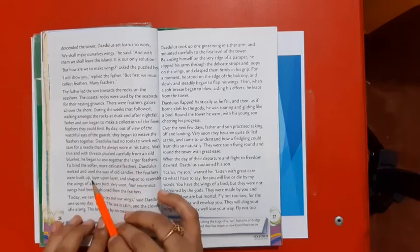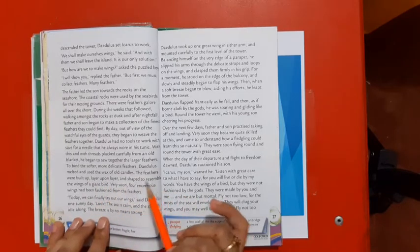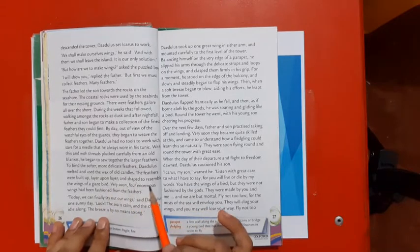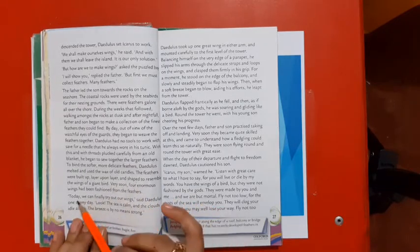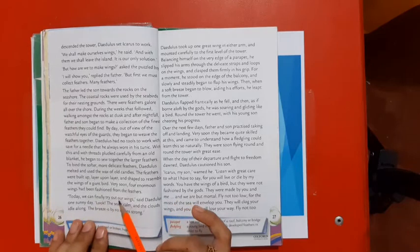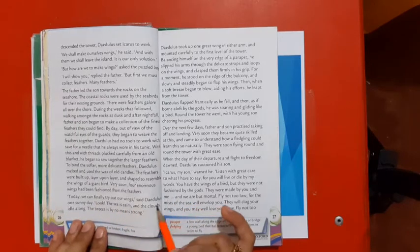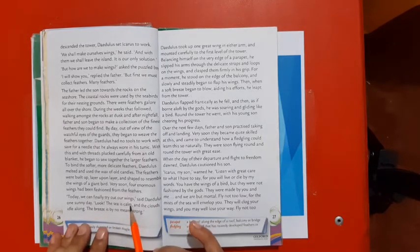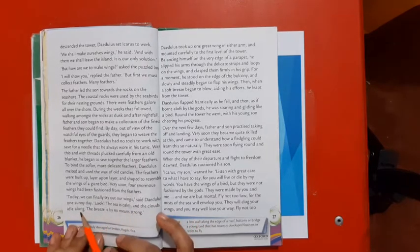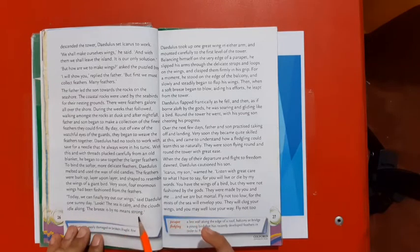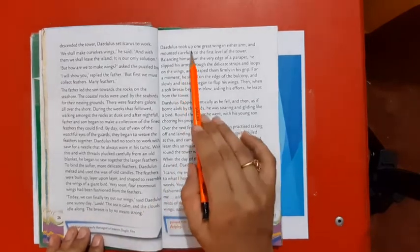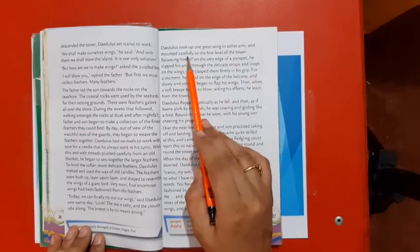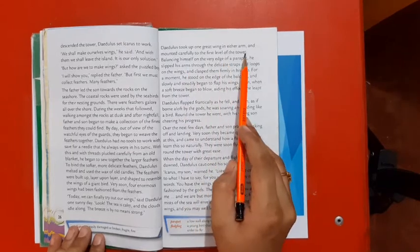The feathers were built up layer upon layer and shaped to resemble the wings of a giant bird. Very soon, four enormous wings had been fashioned from the feathers. Today we can finally try our wings, said Daedalus one sunny day. Look, the sea is calm and the clouds idle. The breeze is by no means strong. Daedalus took up one great wing in either arm and mounted carefully to the first level of the tower.